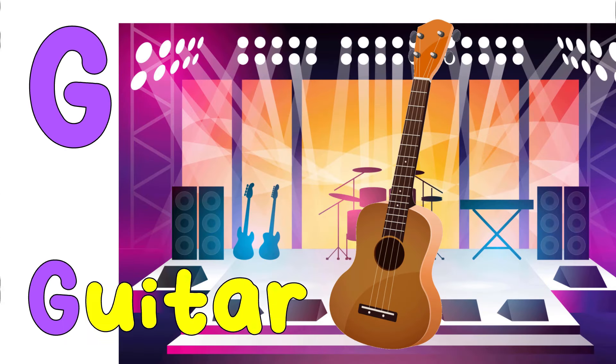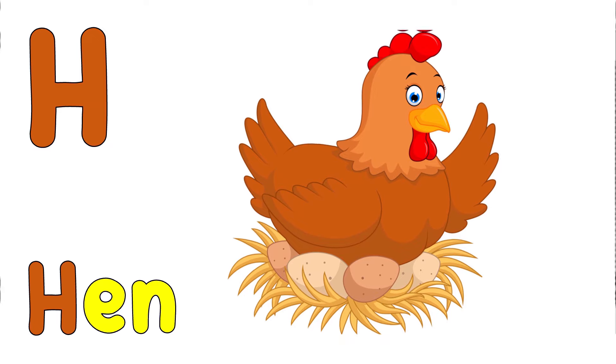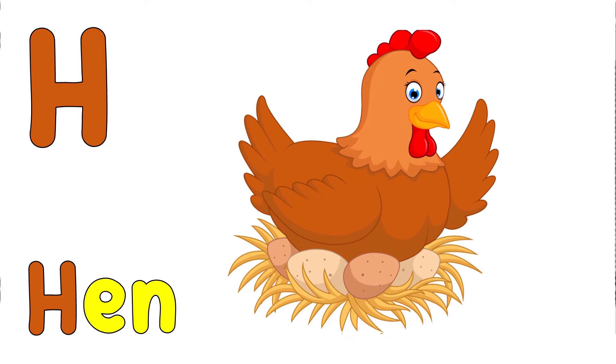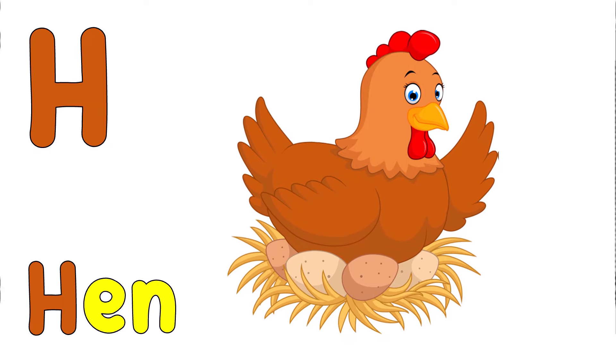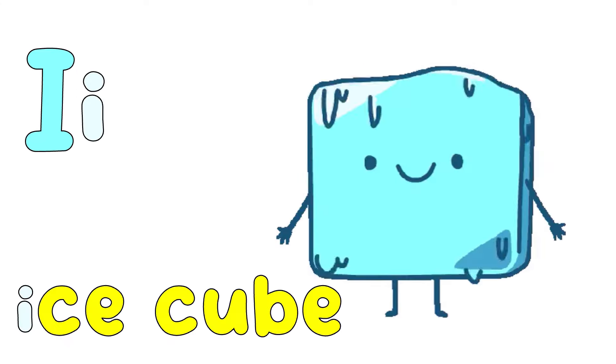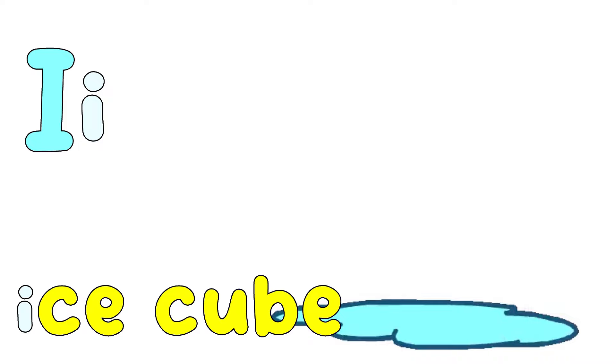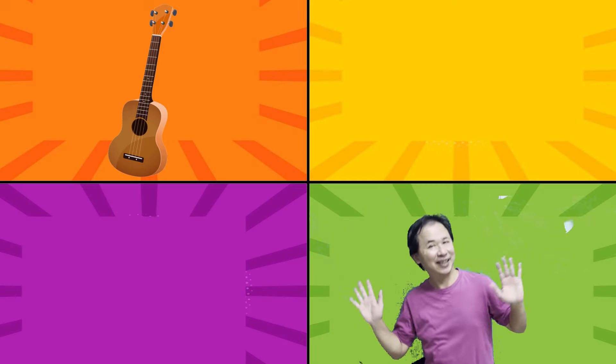G is for guitar. G, G, G. H is for hand. H, H, H. I is for ice cube. I, I, I.